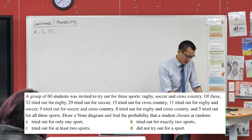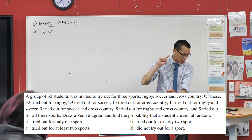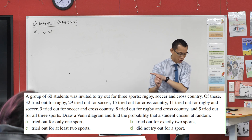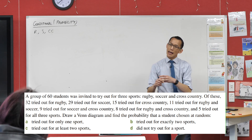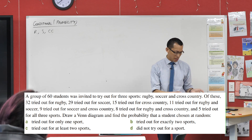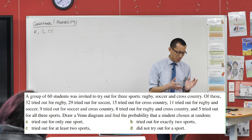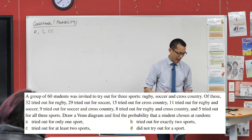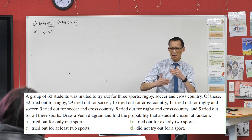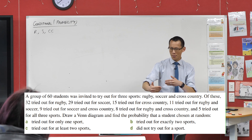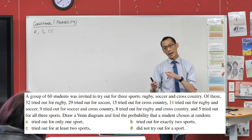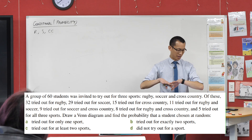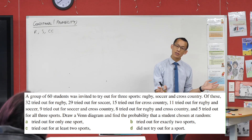If you have a look at the numbers: 32 for rugby, 29 for soccer, 15 for cross country. Even just looking at those three numbers, you can see they add up to more than 60. So clearly I'm double counting some of these, and what we want to do is work out which groups have been counted more than once.